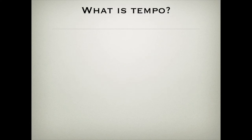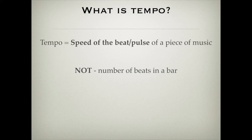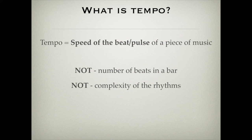So firstly, what is tempo? Tempo is the speed of the beat or pulse of a piece of music. There are two things that students get confused about. Some people say it's the number of beats in a bar — no, that's not correct. The number of beats in a bar is described by the time signature. The other thing that confuses people is some think that the tempo changes as the rhythms get more busy or more complex. It's really important to think that tempo is just a description of the speed of the beat or pulse of a piece of music.